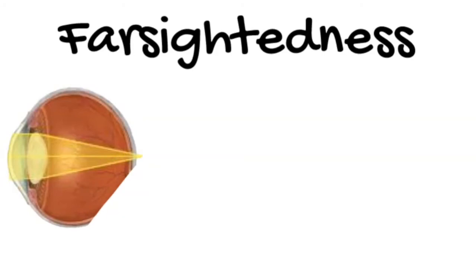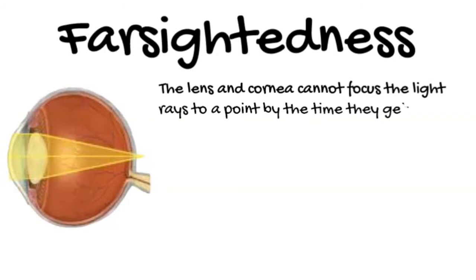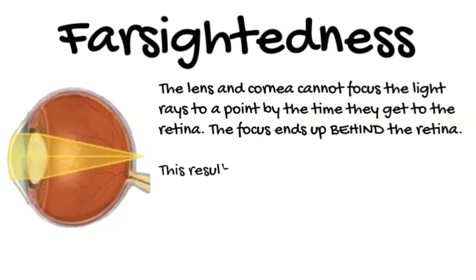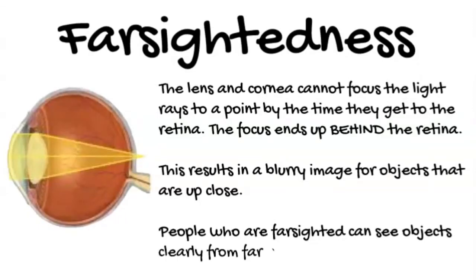If a person is farsighted, the lens and cornea cannot focus the light rays to a point by the time they get to the retina — the focus ends up being behind the retina. This results in a blurry image for objects that are up close. People who are farsighted can see objects clearly from far away, but not close up.